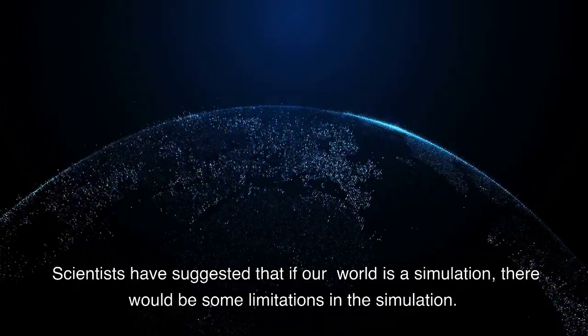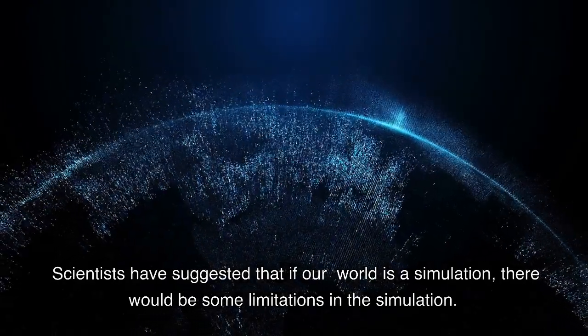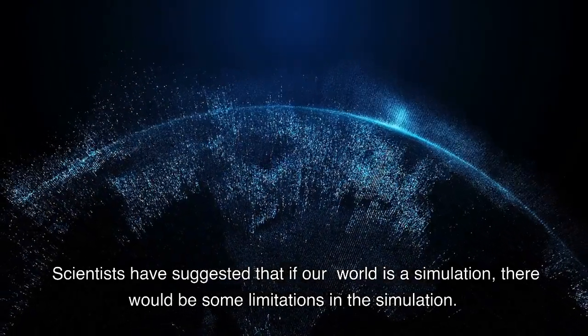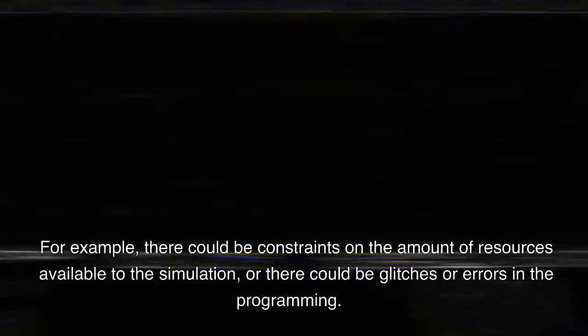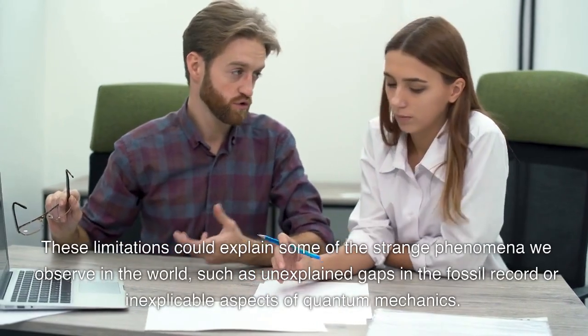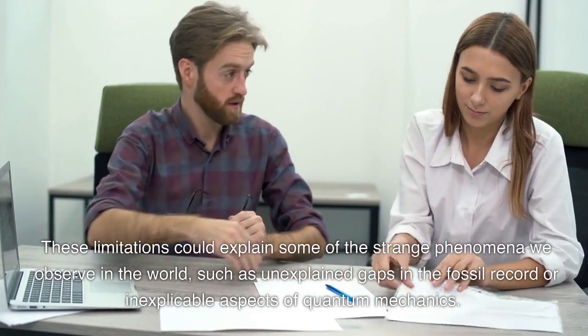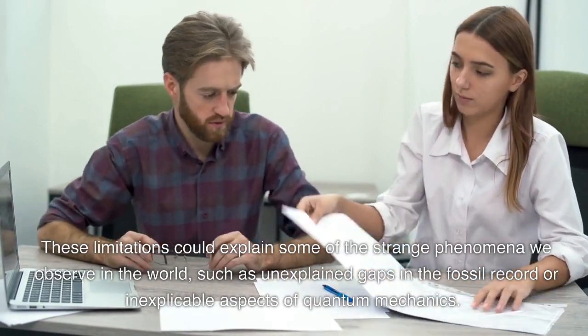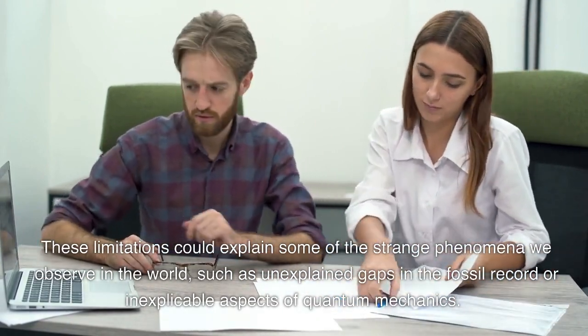Scientists have suggested that if our world is a simulation, there would be some limitations in the simulation. For example, there could be constraints on the amount of resources available to the simulation, or there could be glitches or errors in the programming. These limitations could explain some of the strange phenomena we observe in the world, such as unexplained gaps in the fossil record or inexplicable aspects of quantum mechanics.